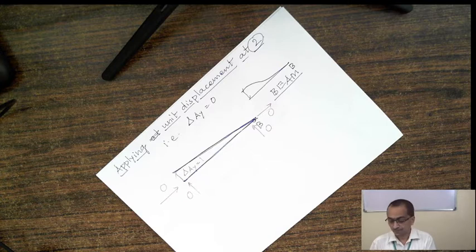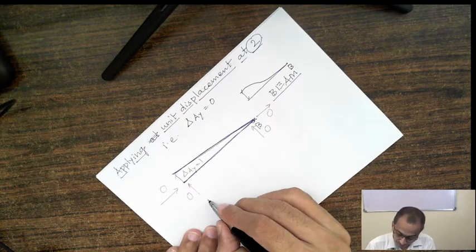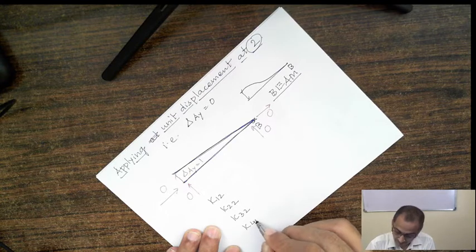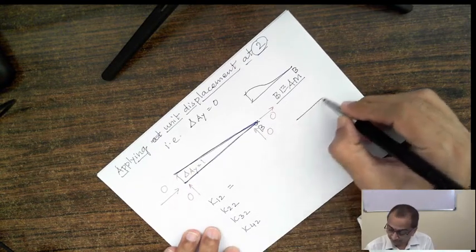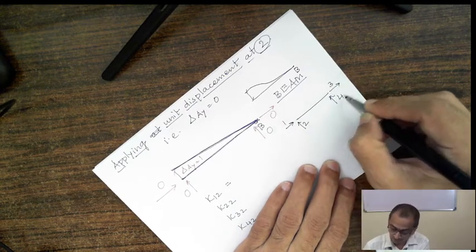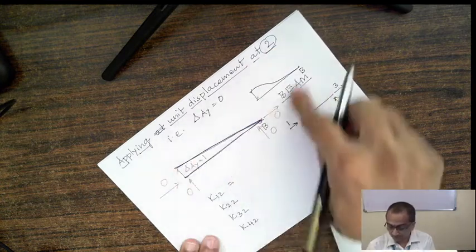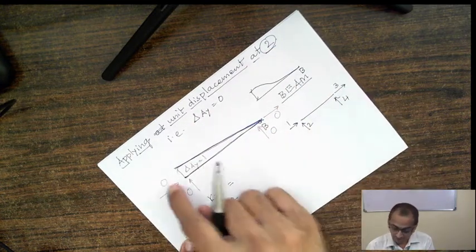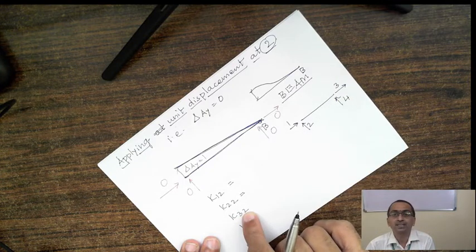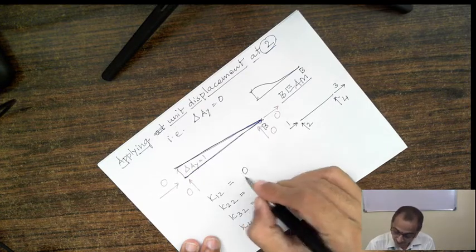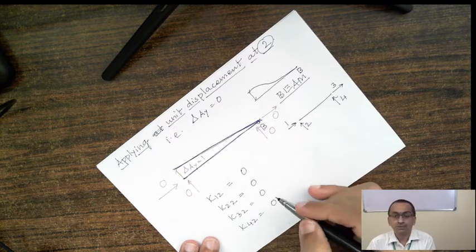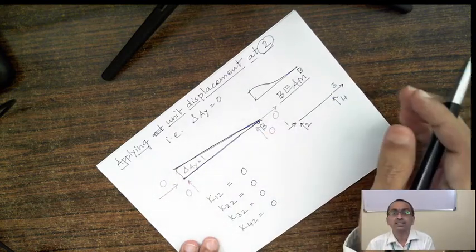For the truss element, no force is required for this type of transverse displacement. So generating the second column — K12, K22, K32, K42 — comparing with the standard truss element coordinates 1, 2, 3, and 4: force at coordinate 1 due to unit deflection at coordinate 2 is 0; similarly K22, K32, and K42 are all 0. So all four coefficients of the second column are 0.